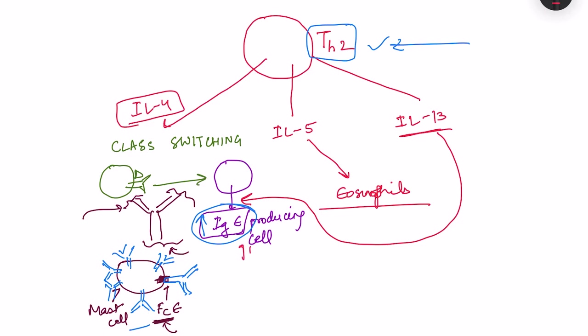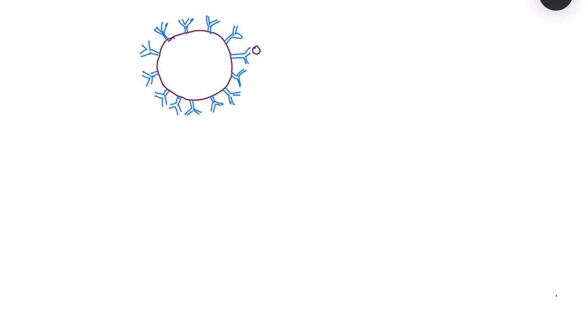More and more IgE production binds to more and more mast cells. When the antigen binds to the IgE antibodies present on the mast cell surface — on the variable portion — binding to two or more IgE antibodies causes cross-linking. This cross-linking is essential for the signal transduction pathways within the mast cell, activating further processes responsible for the hypersensitivity reaction.